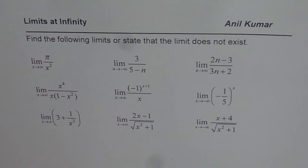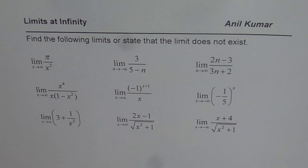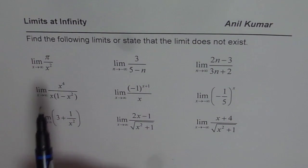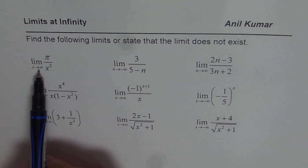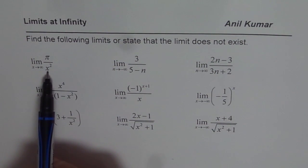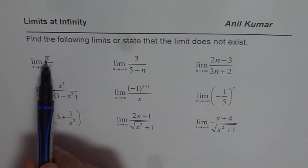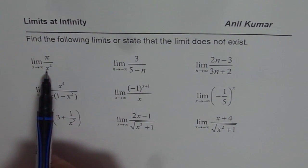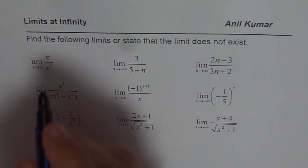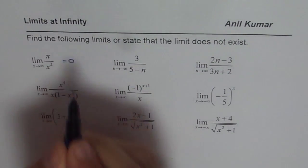Once you have answered these questions, look into the answers here. I already have a few examples which relate to these questions, so you can watch those videos for the method of solving them. Let me answer them one by one. The first one: as x approaches positive infinity, x is in the denominator and π is a constant. So if x is very large, this number is going to be very small, so the limit is 0.